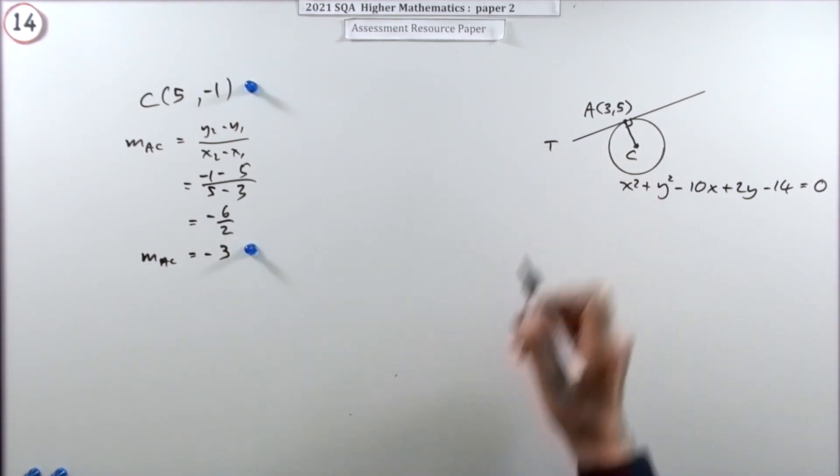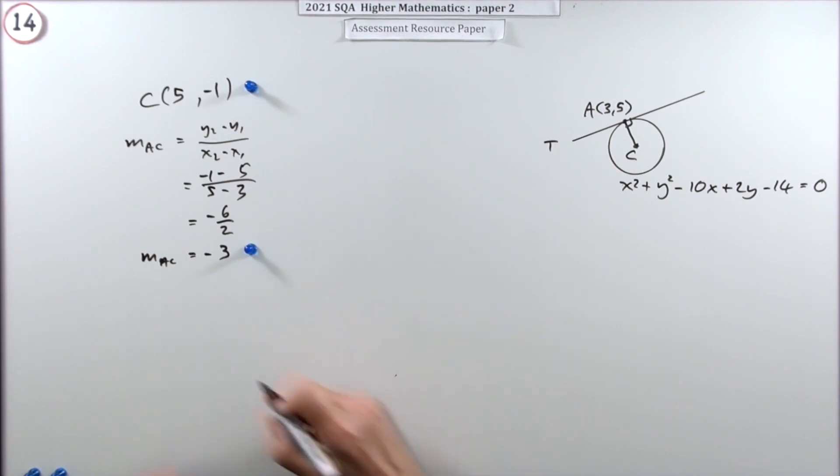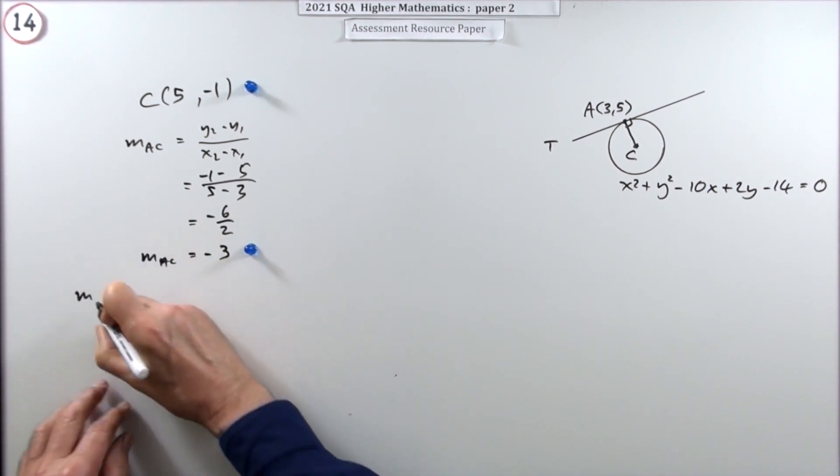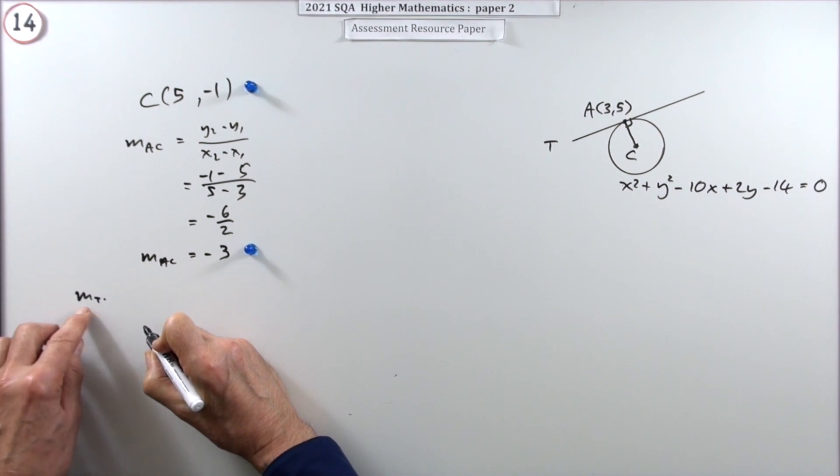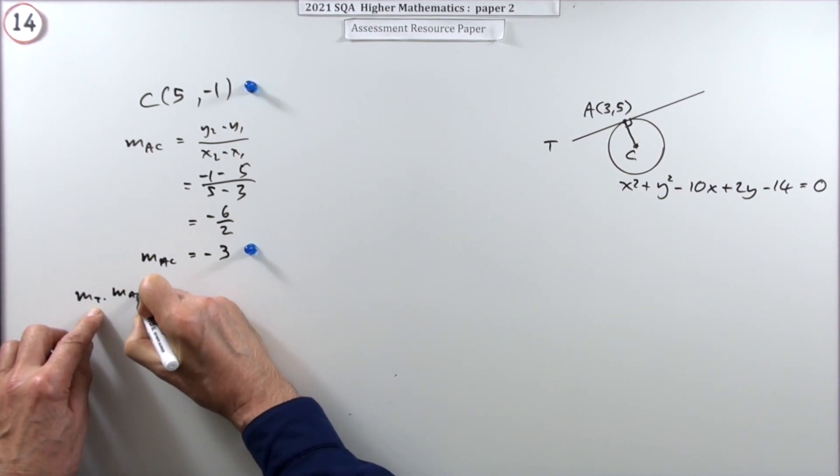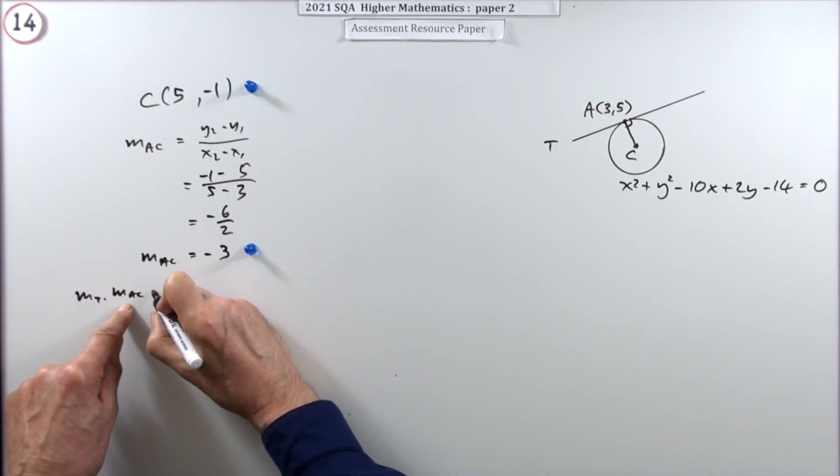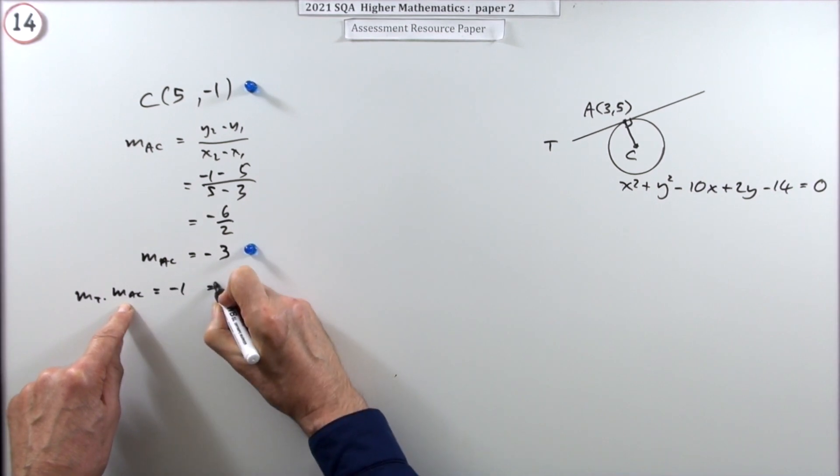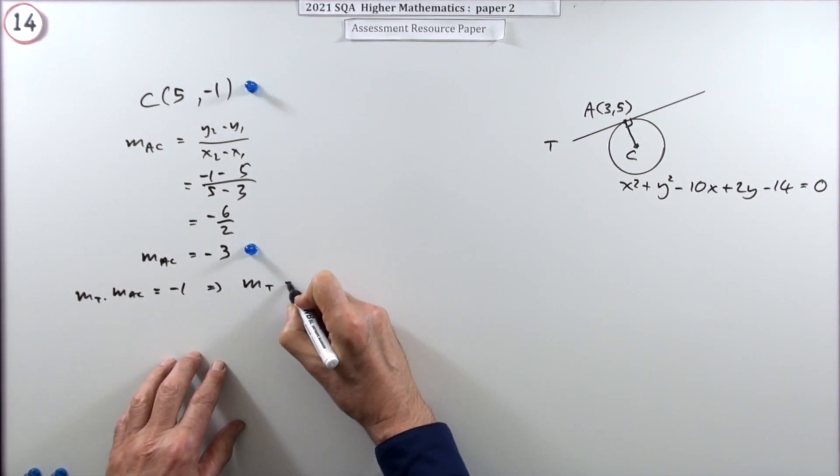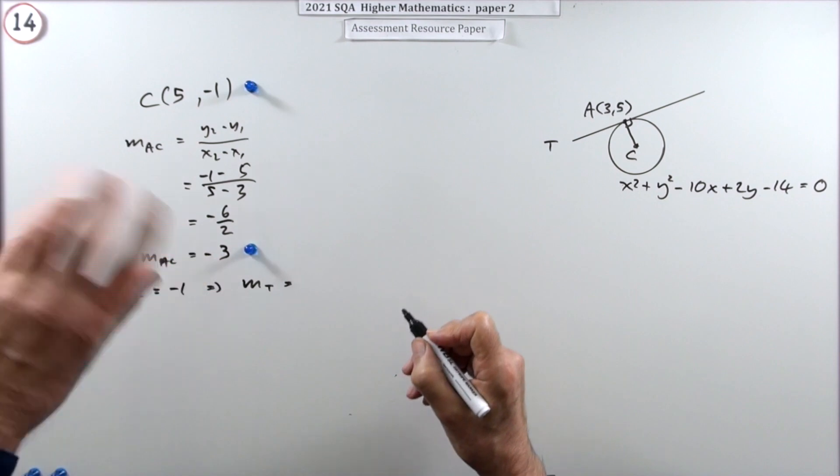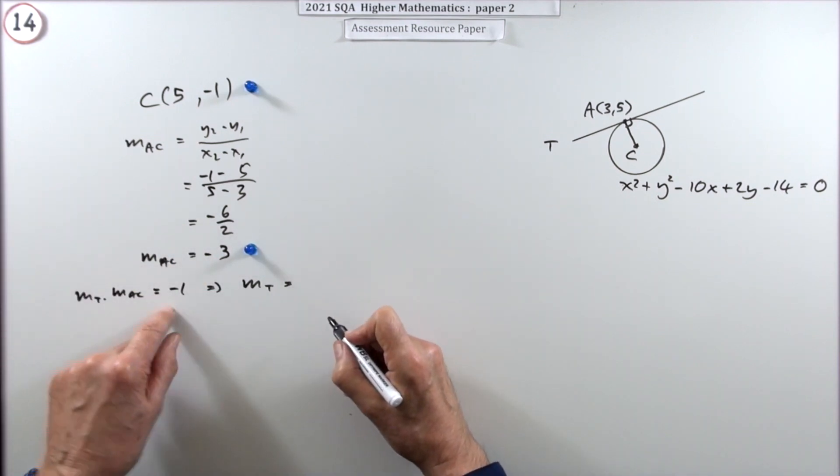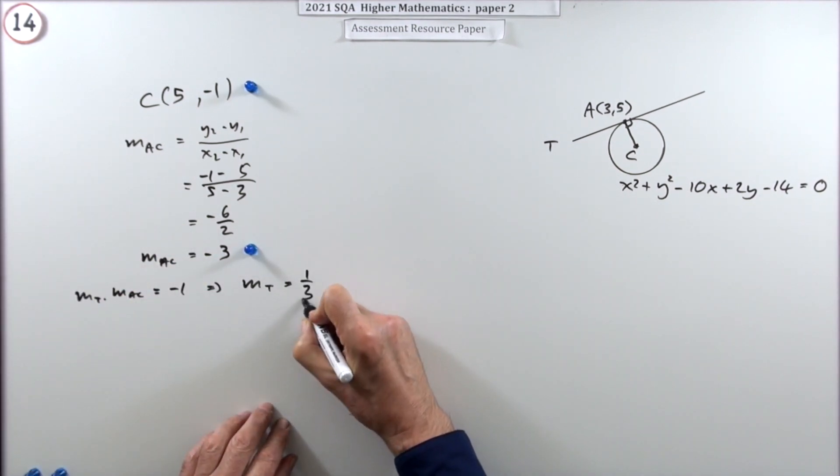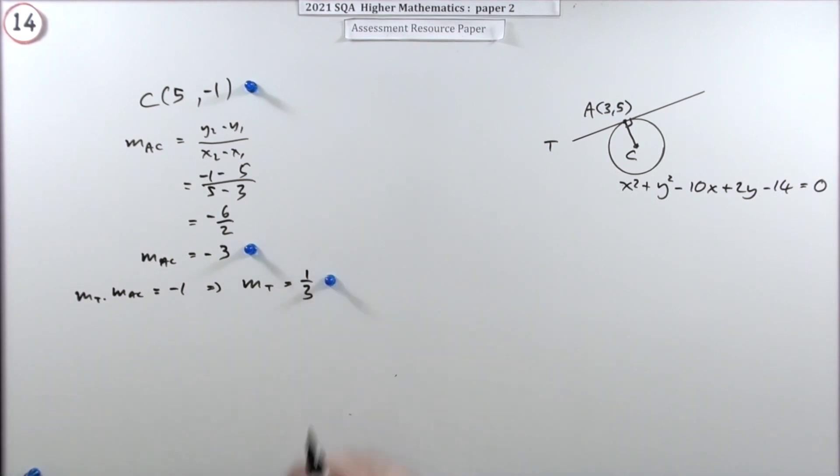Now, you've got this tangent. You could just go straight in with it. The gradient of the tangent, since the gradient of the tangent times that gradient should come to negative 1, that means the gradient of the tangent will be, whatever cancels it all out, the opposite sign of the reciprocal, will be a third. That gets a mark.